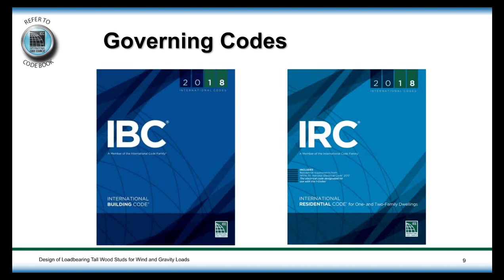The governing codes for what we'll be covering today are the 2018 International Building Code and the 2018 International Residential Code. We'll be drawing some specific provisions from those, including deflection criteria. All the standards we'll be talking about are referenced in these two model codes.